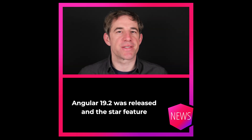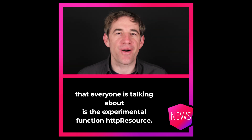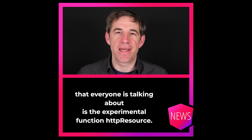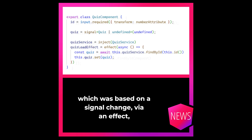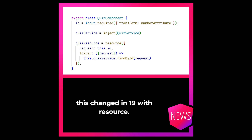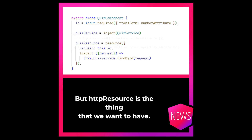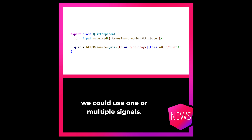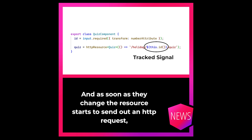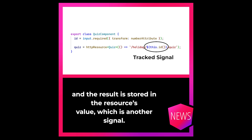Angular 19.2 was released and the star feature that everyone is talking about is the experimental function HTTP resource. Before Angular 19, we had to trigger an HTTP request based on a signal change via an effect. This changed in 19.0 with resource. The HTTP resource is optimized for reactivity — within the URL parameter we can use one or multiple signals, and as soon as they change, the resource sends out an HTTP request and the result is stored in the resource's value, which is another signal.